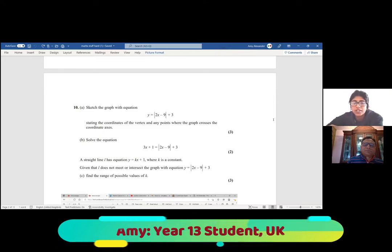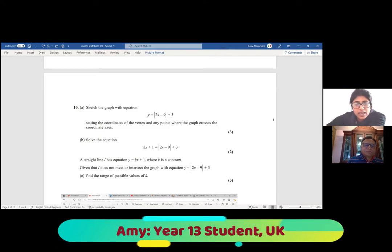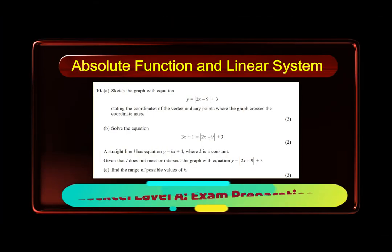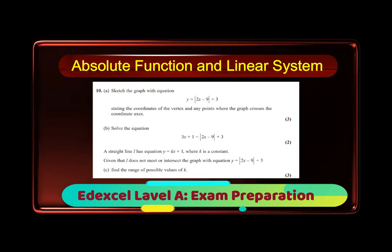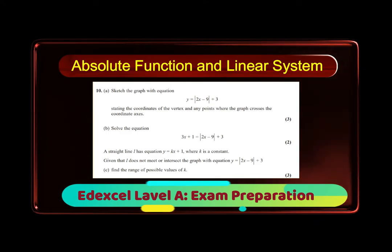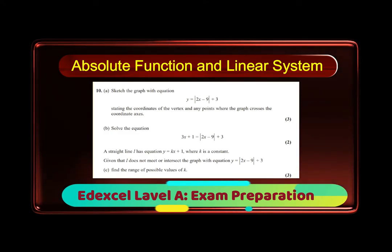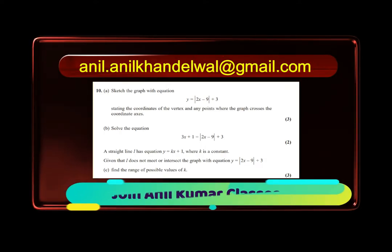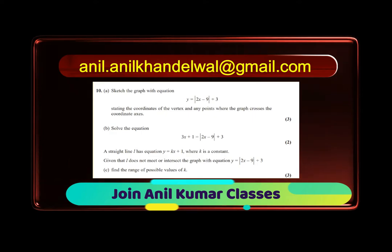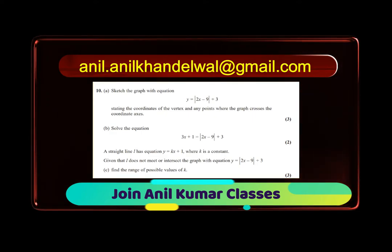The question asks about a line L that does not meet or intersect the graph with equation y equals the absolute value of 2x minus 9 plus 3, and we need to find the range of possible values. This is part C of the question. I'm Anil Kumar, welcome to my YouTube channel and the website Global Math Institute. We normally take questions which students find difficult — the idea is to make them understand basic concepts and look into strategies to solve such questions. In this playlist, we are preparing students for the final exams at EdExcel Level A.